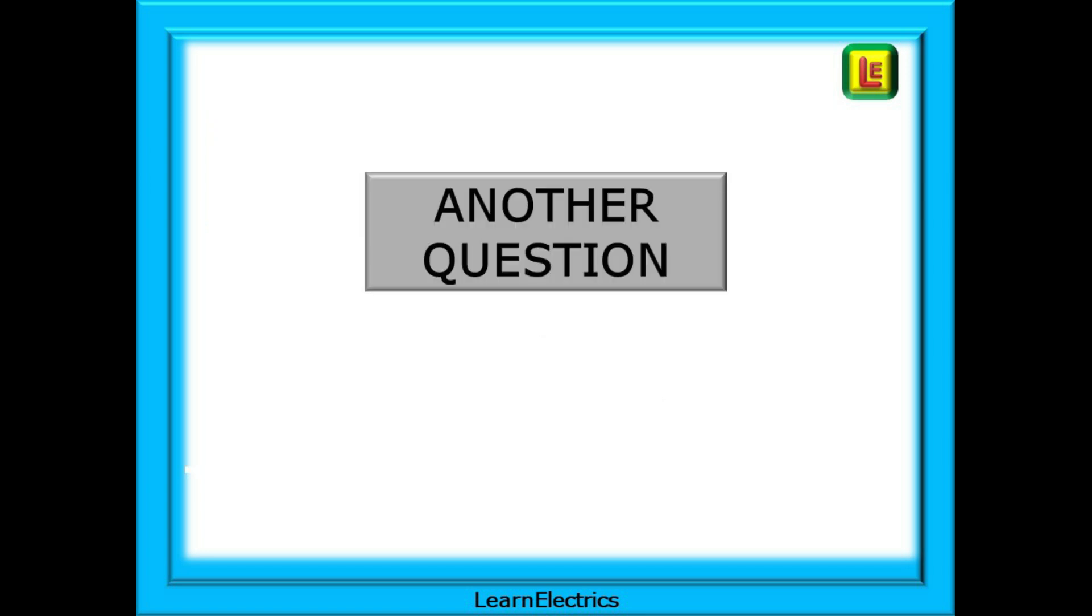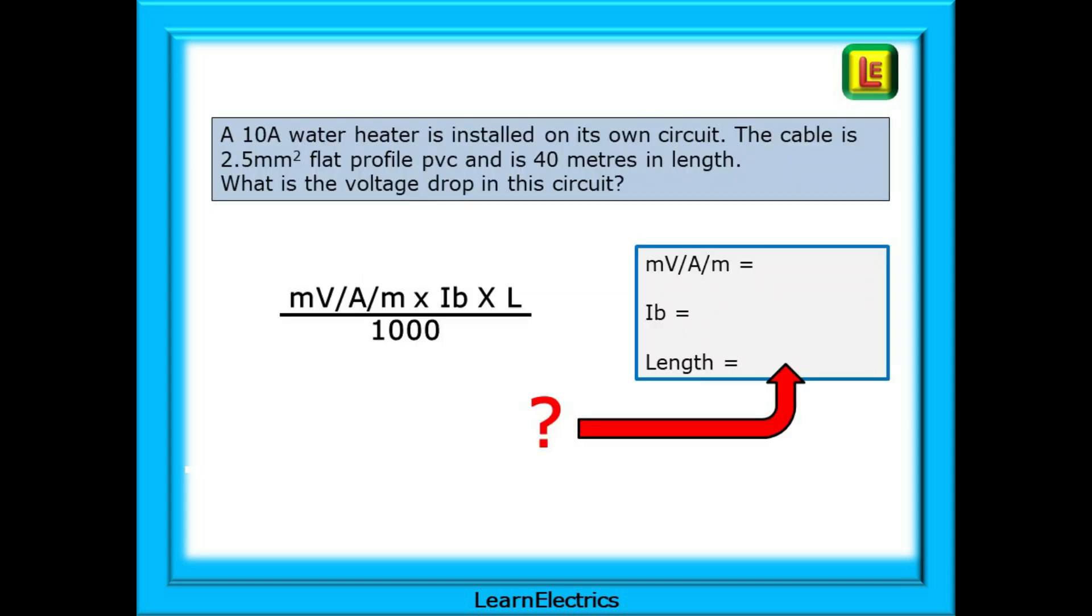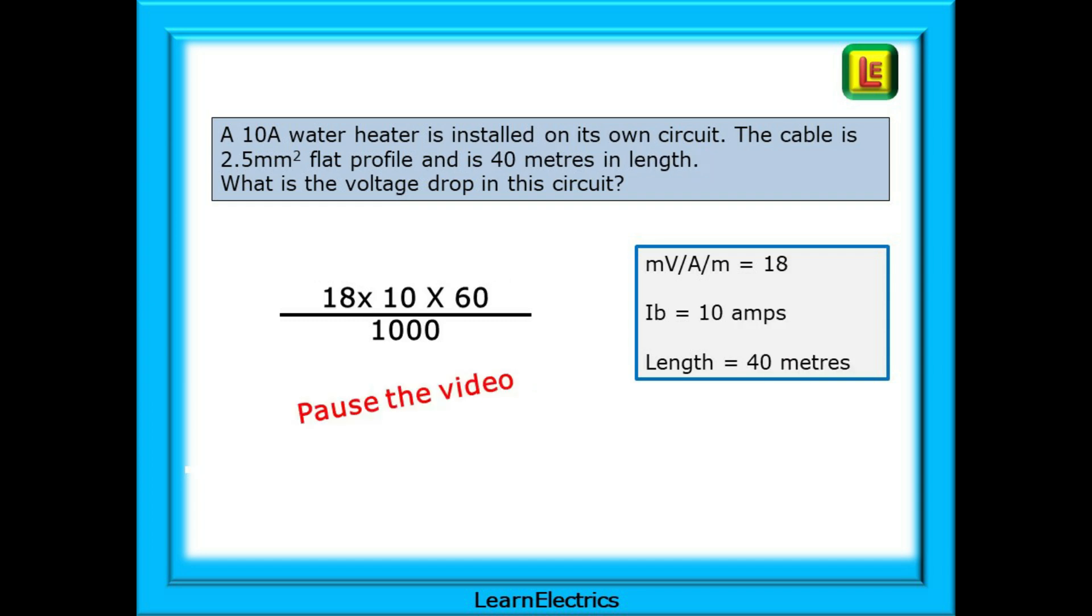Let's try another question on voltage drop. A 10 amp water heater is installed on its own circuit. The cable is 2.5 square millimetre flat profile and is 40 metres in length. What is the voltage drop in this circuit? Here we have the data from the question entered into the little box. Pause the video and have a go at answering the question. You should have an answer of 7.2 volts for the actual voltage drop for this circuit.